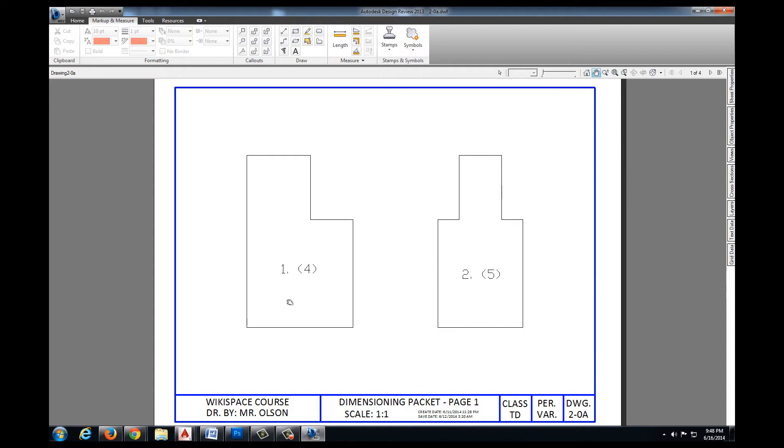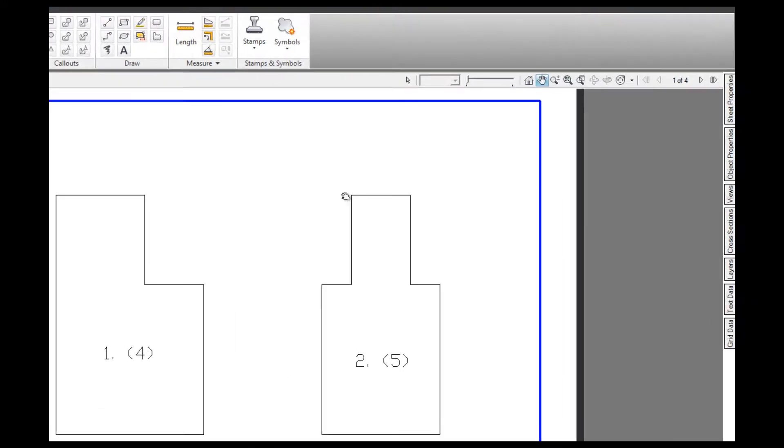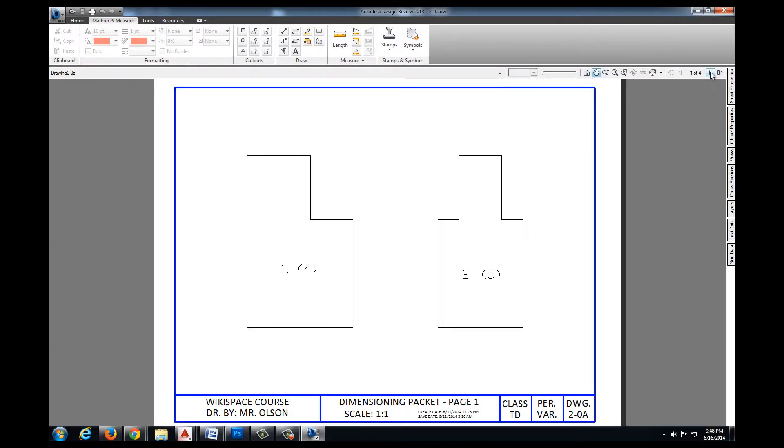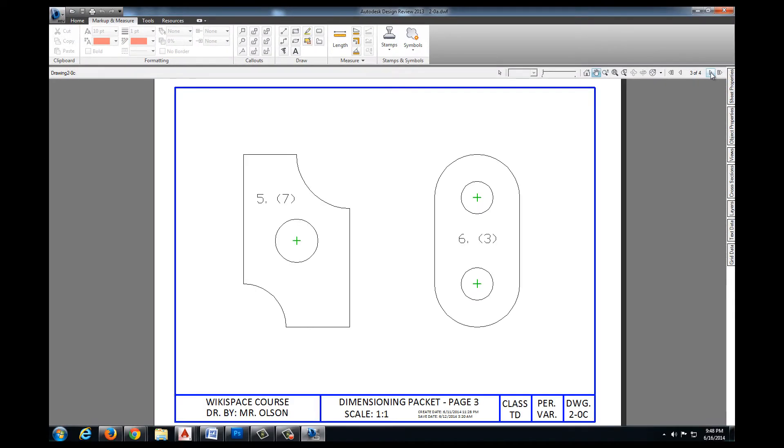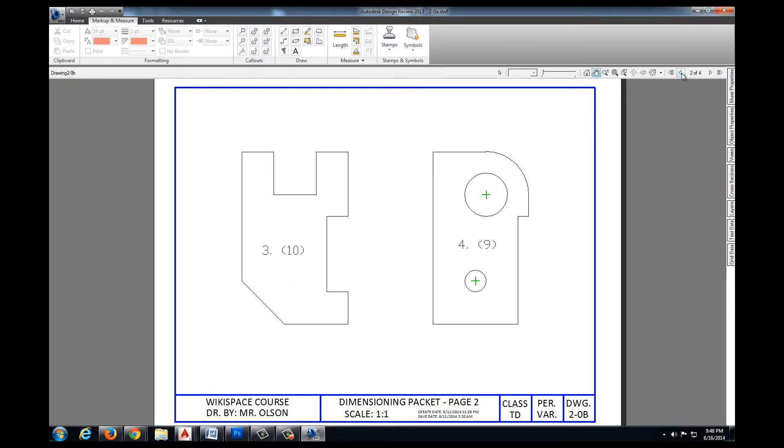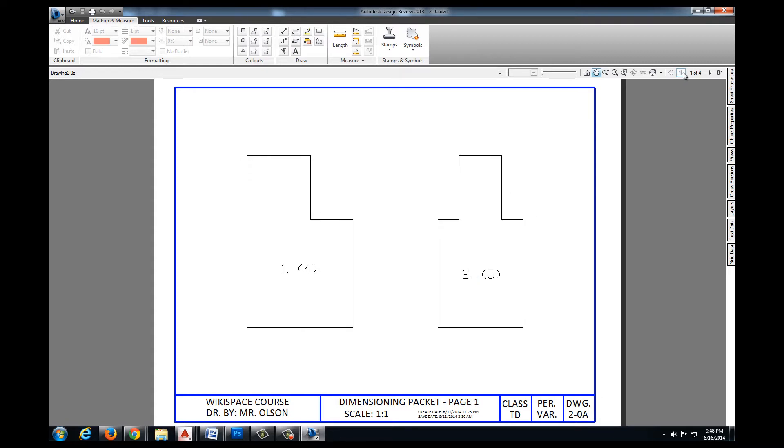Now I only see page one by default. If we come up here towards the top right we can see it says page one of four. I can go to the next page and the next one and the fourth page and I get all of the different pages that I have here for this particular packet.